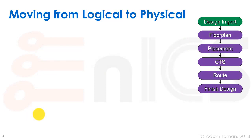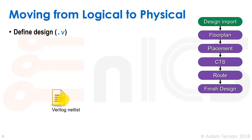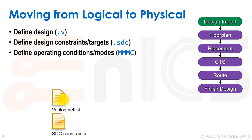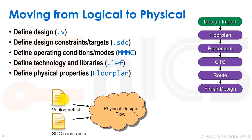Looking at what we need to move from logical to physical design: we have to define our design — usually a .v Verilog file, a Verilog netlist from synthesis. We also have our SDC constraints, basically the same SDC constraints from synthesis, which tell our tools what our optimization goals are. We have to define operating conditions and operating modes — that's MMMC. And since we're going into the physical world, we need technologies and libraries such as LEF files. We take all these inputs, define a floor plan, and enter what's called the physical design flow, which produces a detailed layout exported as a GDS2 file.